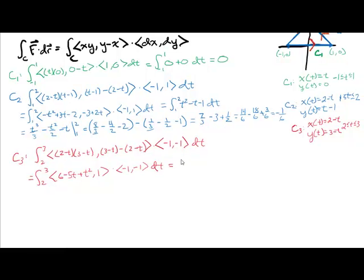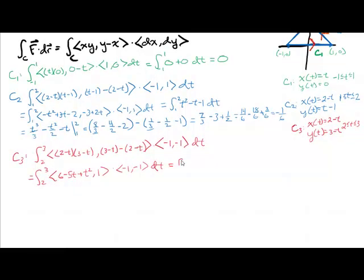Dotted with ⟨-1, -1⟩ dt. Doing the dot product gives us ∫₂³ (-7+5t-t²) dt. Then we take our anti-derivative.